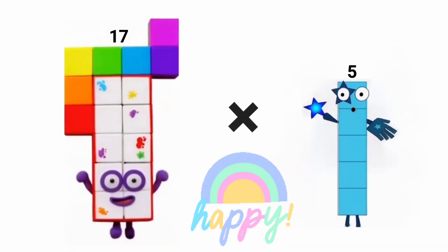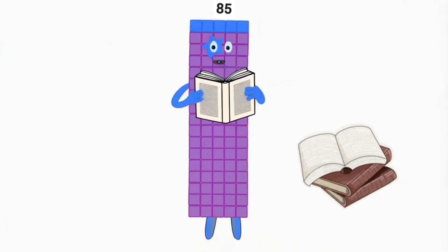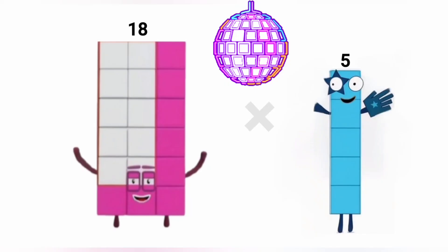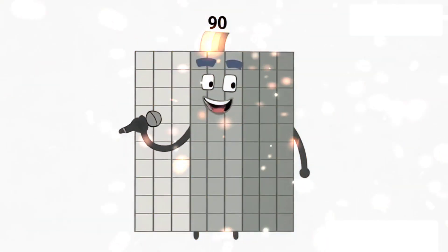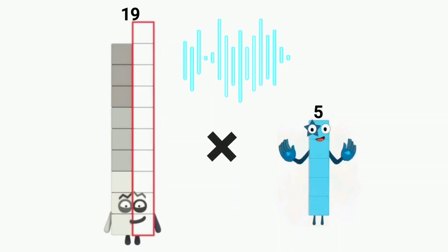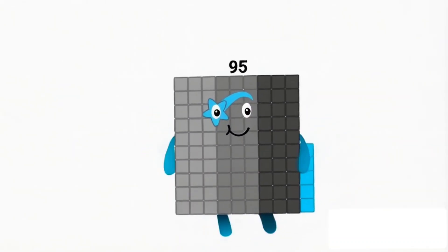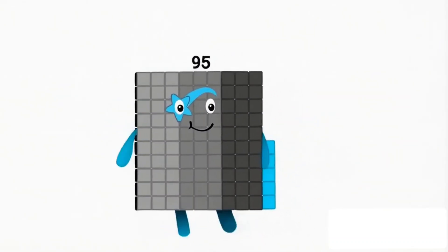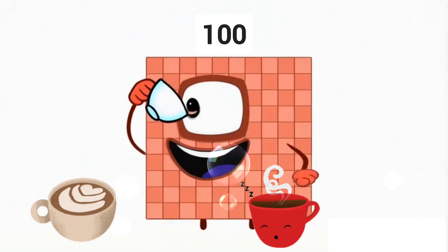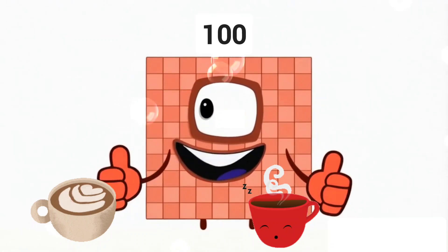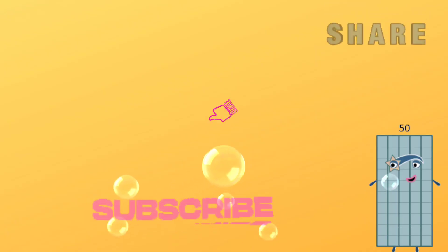17 times 5 equals 85. 18 times 5 equals 90. 19 times 5 equals 95. 20 times 5 equals 100.